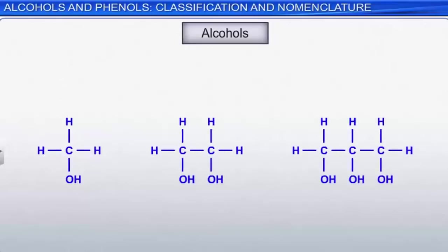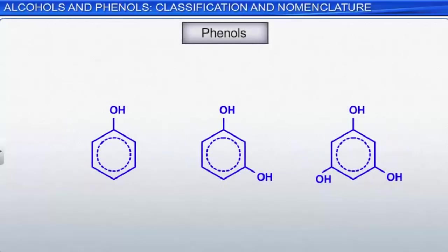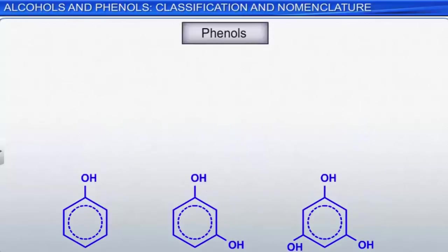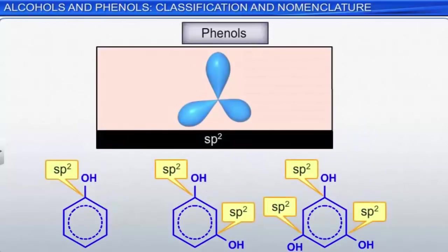Alcohols are organic molecules that contain one or more hydroxyl groups attached to a carbon atom or atoms. By contrast, phenols contain one or more hydroxyl groups attached to a carbon in an aromatic ring. In phenols, the carbon attached to the hydroxyl group is sp2 hybridized.